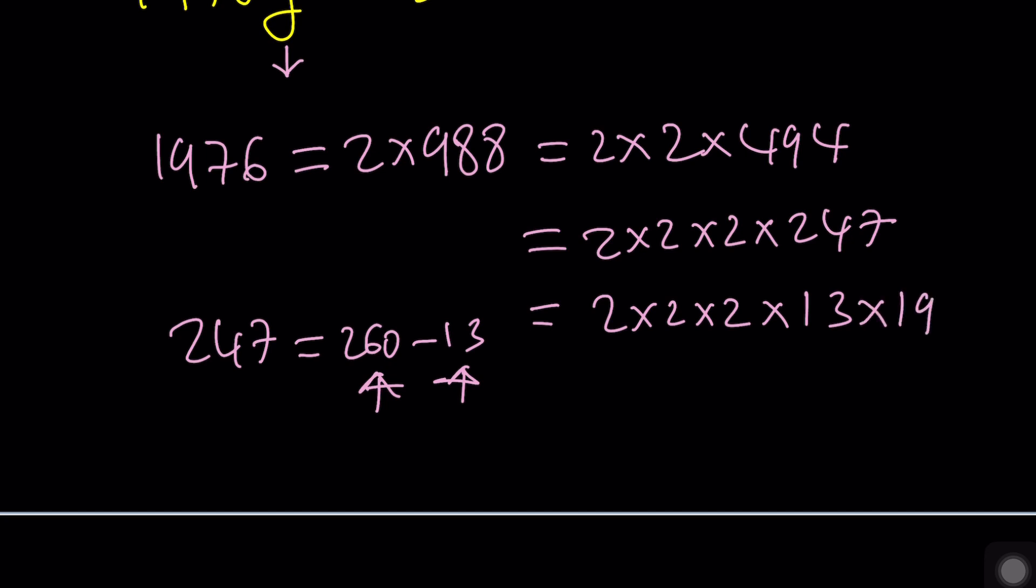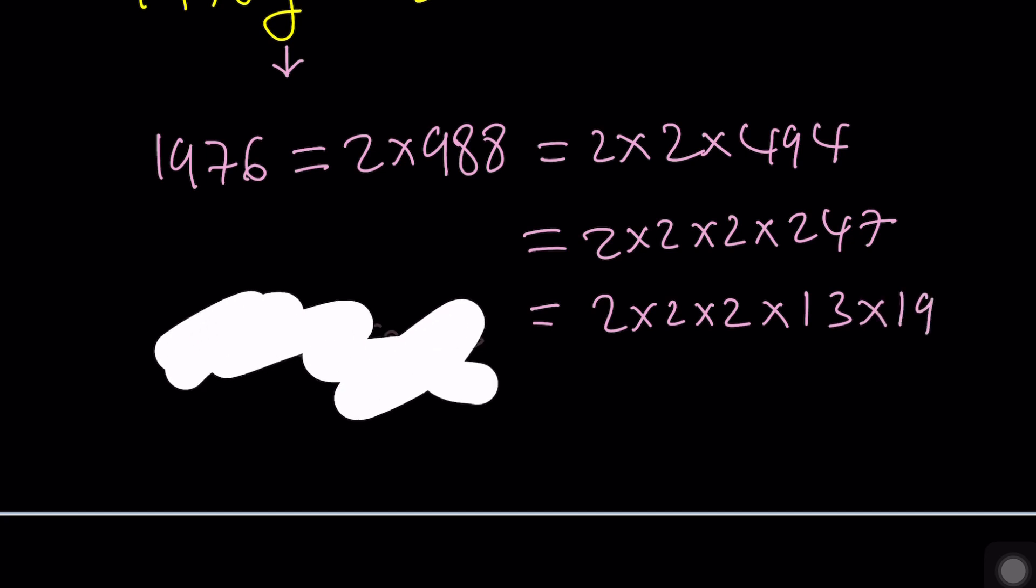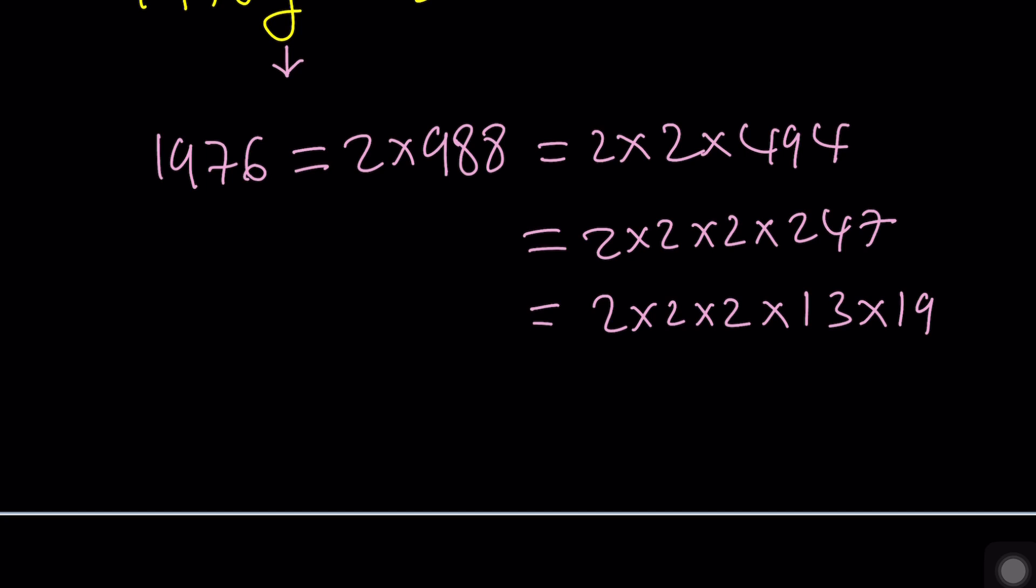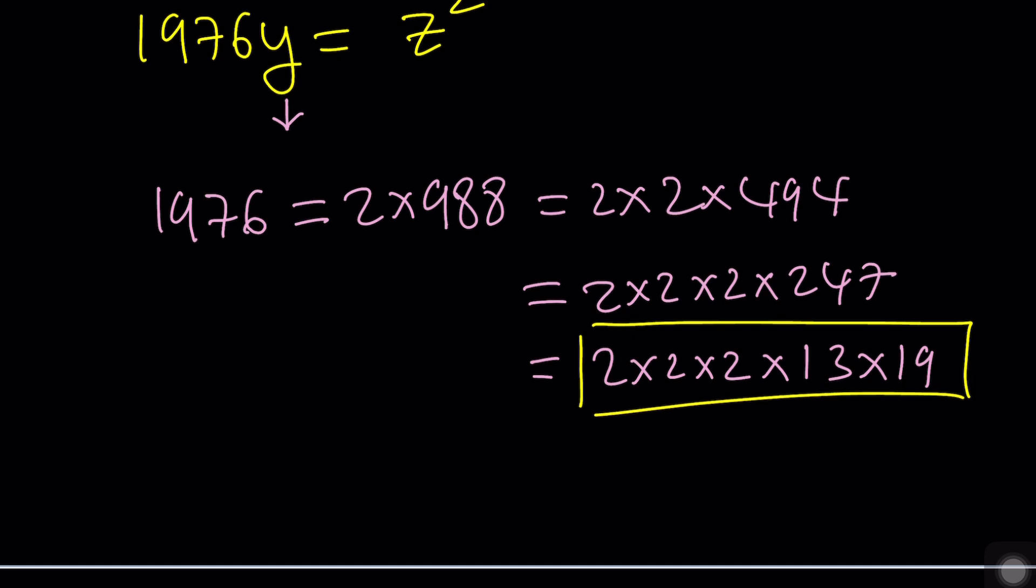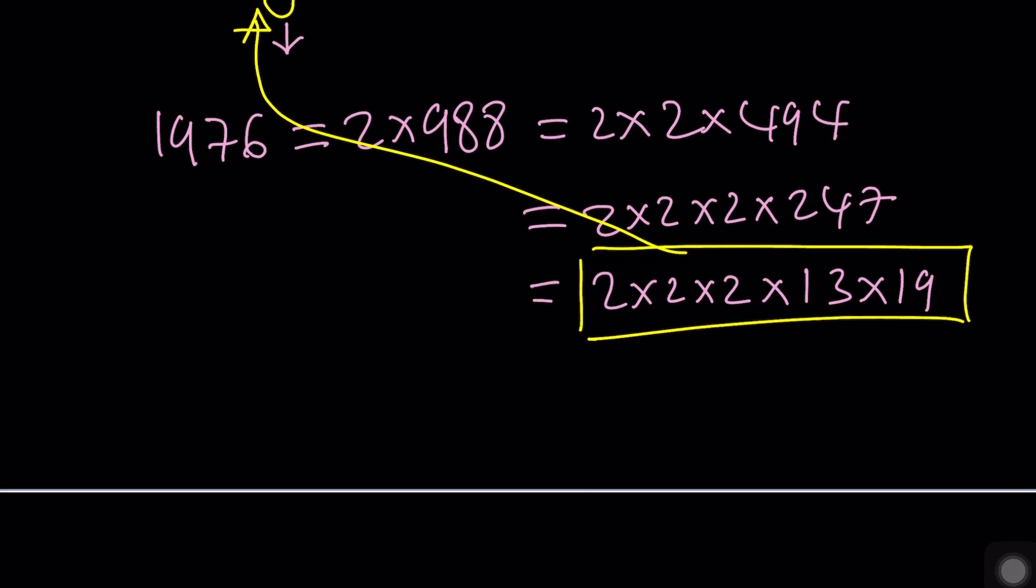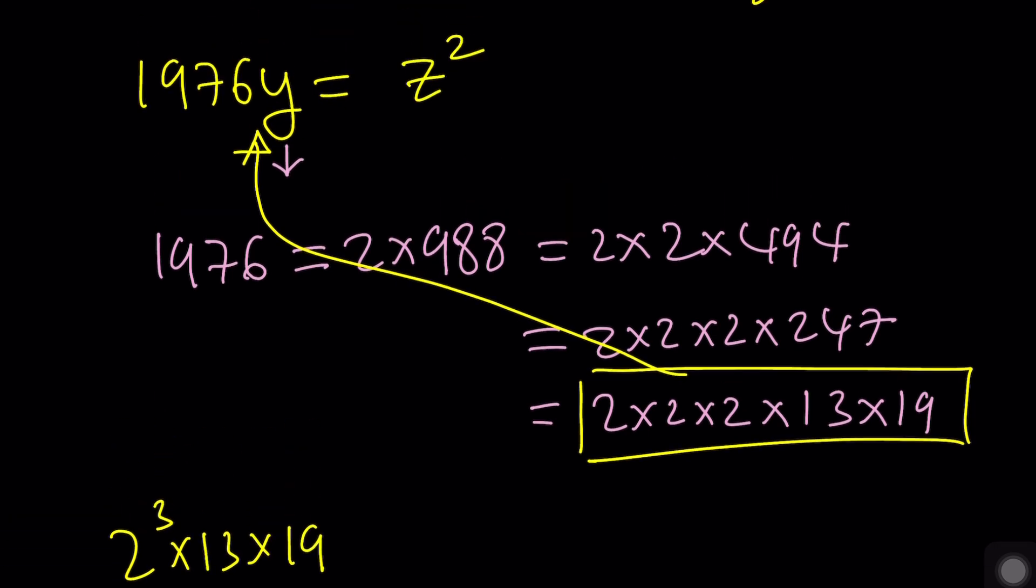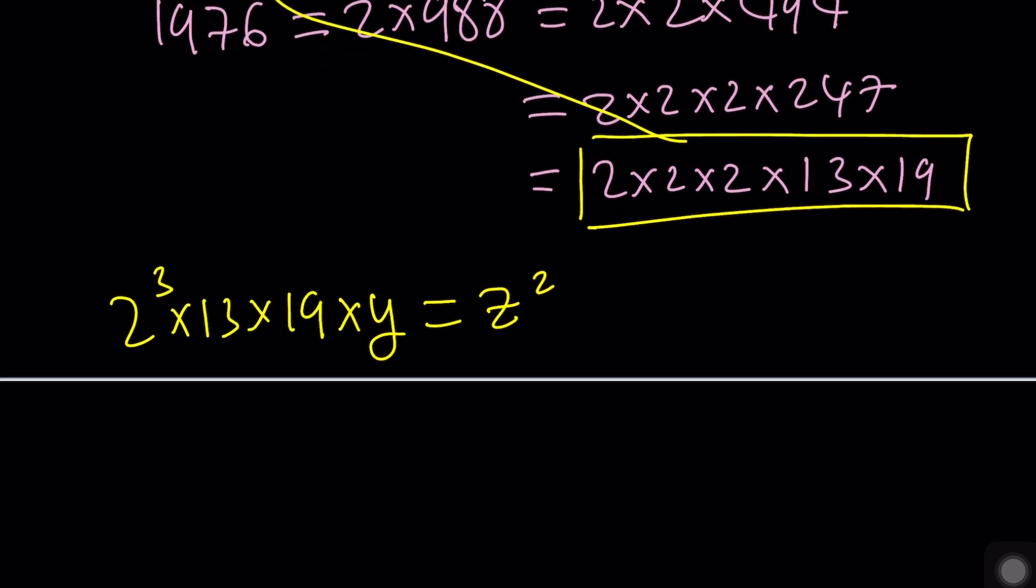Now what do you do with that information? You're going to go ahead and plug it in here. So now we have 2 to the third times 13 times 19 times y equals z squared. By the way, if these are looking like x and that kind of bothers you like me, then we can turn them into dots. Just use the dot symbol which is something that I like better.